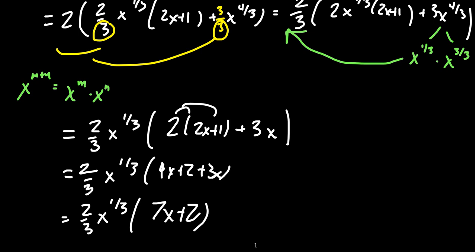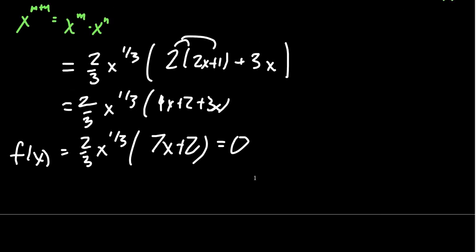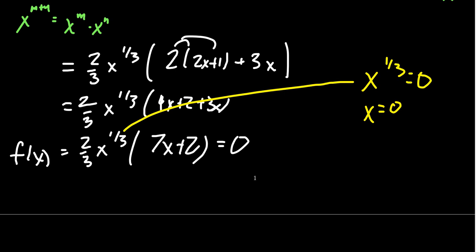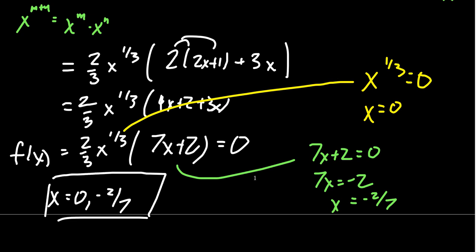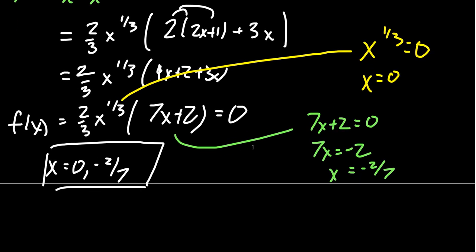Now that our function is completely factored, we find x-intercepts by setting it equal to 0. By the zero product property, either x^(1/3) = 0, which gives x = 0 by cubing both sides, or 7x + 2 = 0, giving x = -2/7. We also check the domain: the only concern is fractional exponents, but since we're taking cube roots — an odd root — the domain is all real numbers. So 0 and -2/7 are our two x-intercepts.